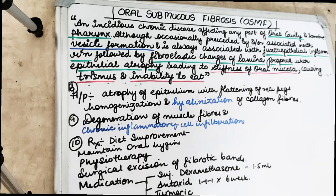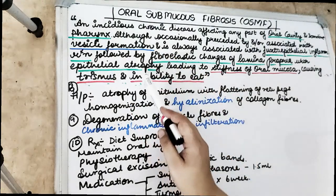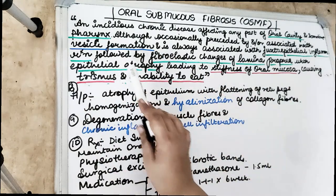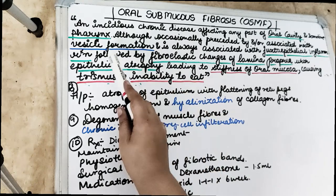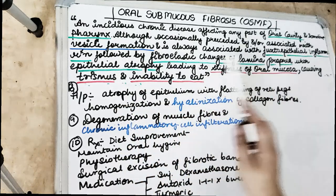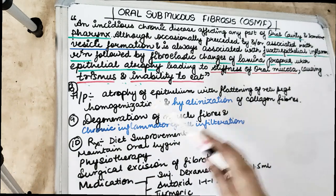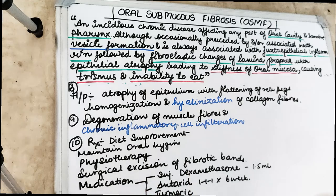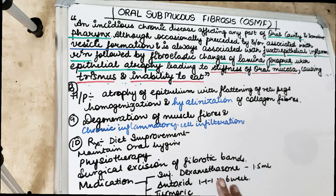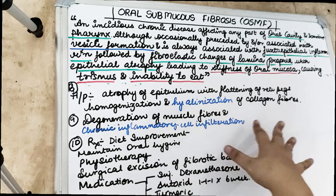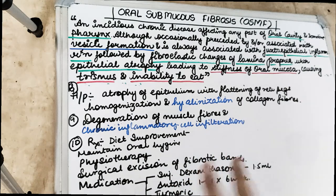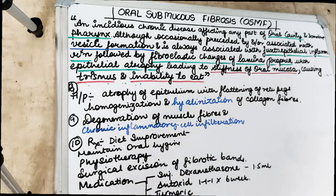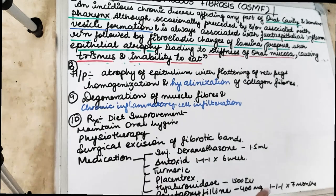Histologically, as stated in the definition, there is a juxtaepithelial inflammatory reaction followed by fibroelastic changes of the lamina propria with epithelial atrophy. In the histology we see atrophy of the epithelium, flattening of the rete pegs, and a variable degree of cellular atypia. In the connective tissue there is homogenization and hyalinization of the collagen fibers, degeneration of muscle fibers, and chronic inflammatory infiltration.